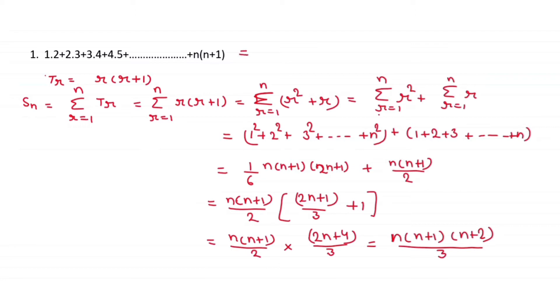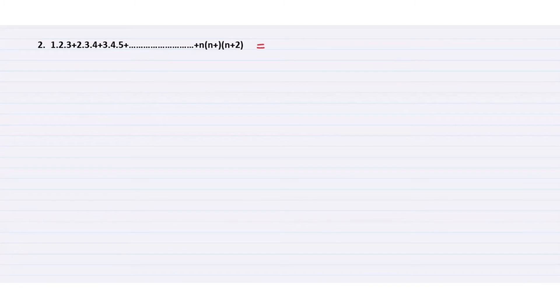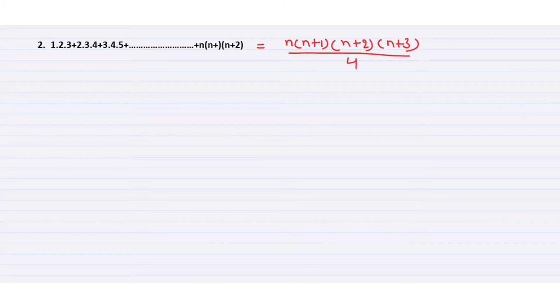So when this type of series is given, you can use this formula directly. The sum of n terms is n(n+1)(n+2)/3. Similarly, if you are given a series like 1×2×3 + 2×3×4 + 3×4×5, you will get the formula n(n+1)(n+2)(n+3)/4.